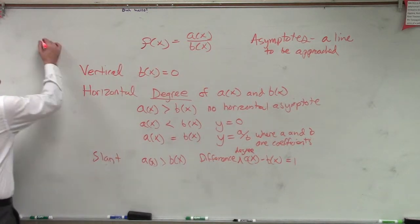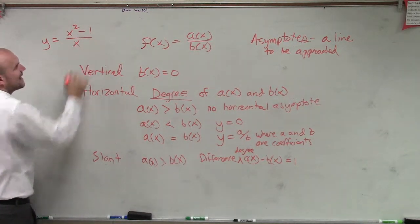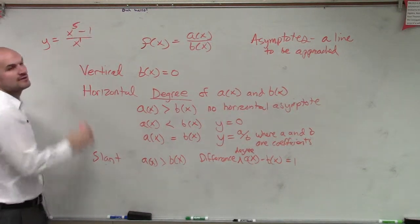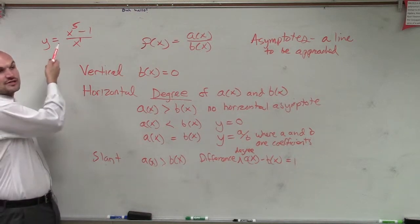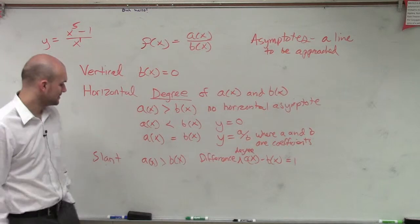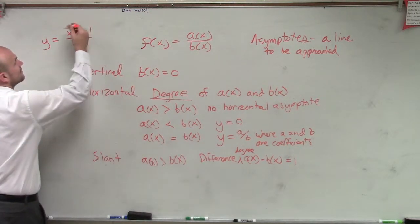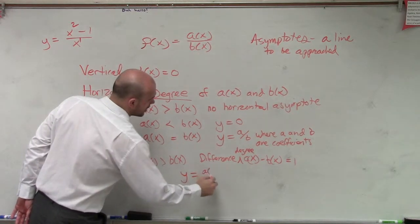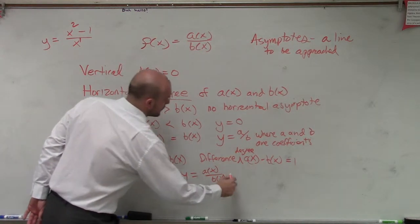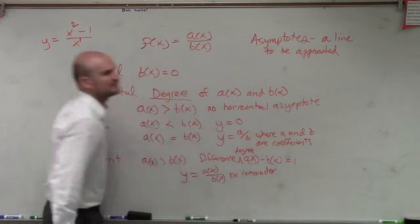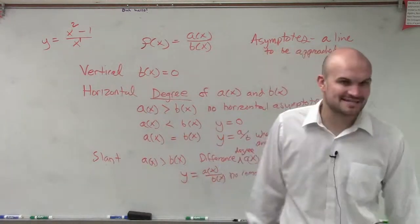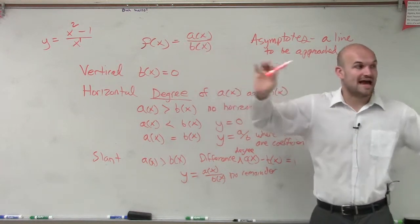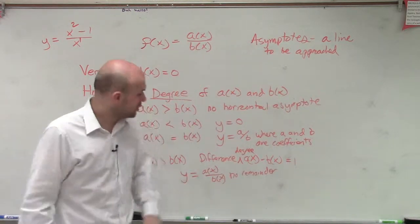For example, if I have y equals x squared minus 1 divided by x, that has a slant asymptote because the difference in degrees is 2 minus 1, which equals 1. But if I change that to x to the 5th, the difference in degrees is not 1, so it has no horizontal and no slant asymptote. The slant asymptote is y equals the quotient of a of x divided by b of x with no remainder. What you do is divide your denominator into your numerator using long division — that quotient, without the remainder, is your slant asymptote. We'll get into more of this a little bit later.